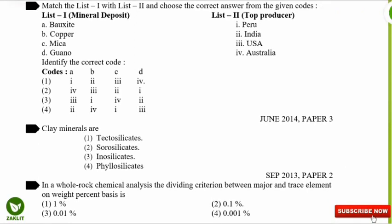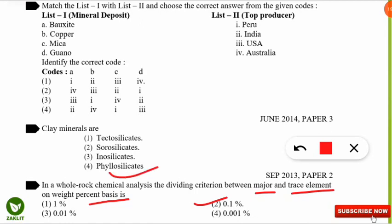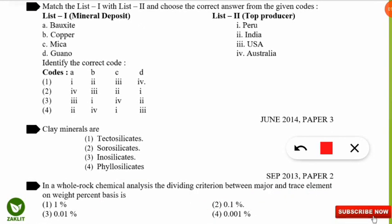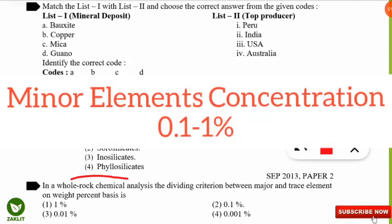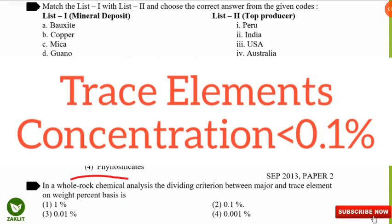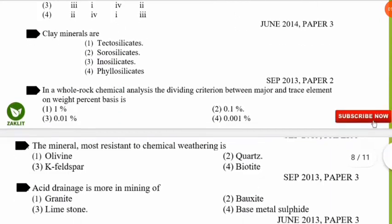In a whole-rock chemical analysis, the dividing criterion between major and trace elements on a weight percent basis is 0.1%. Major elements have concentration greater than 1%; minor elements have concentration between 0.1% and 1%; and trace elements have concentration less than 0.1% (or less than 1000 ppm). Note this down — it is important.